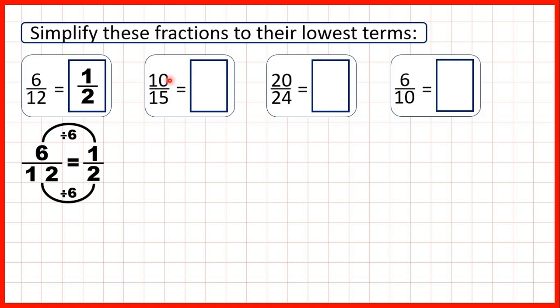Now we have 10 fifteenths. 10 and 15 are both in the 5 times table. So we can divide both the numerator and the denominator by 5. 10 divided by 5 is 2, 15 divided by 5 is 3, so 10 fifteenths simplifies to 2 thirds.